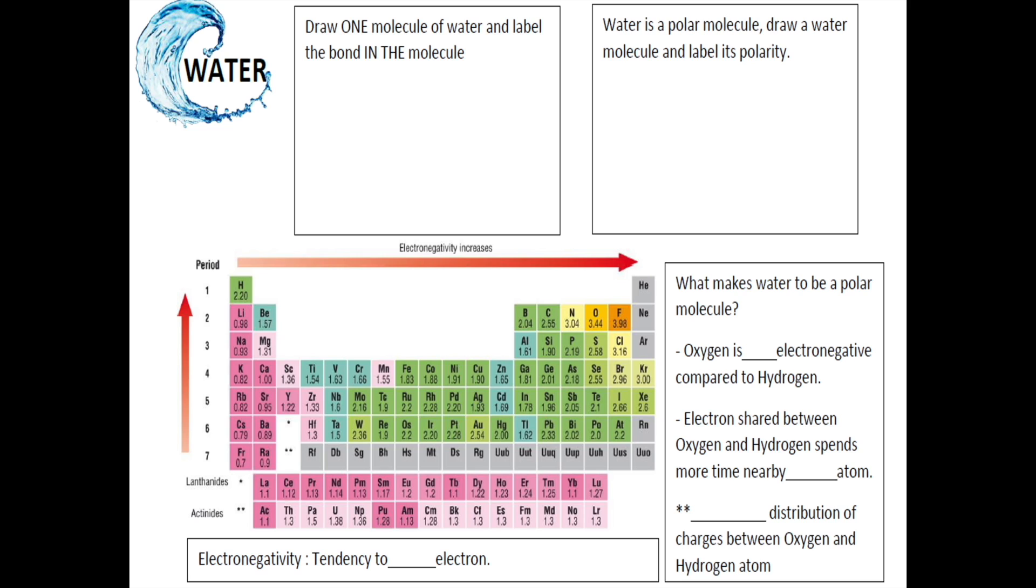Water. What is the chemical formula for water? Water is known as H2O. Let's draw one molecule of water and label the bond in the molecule. Water consists of one oxygen atom covalently bonded with two hydrogen atoms.